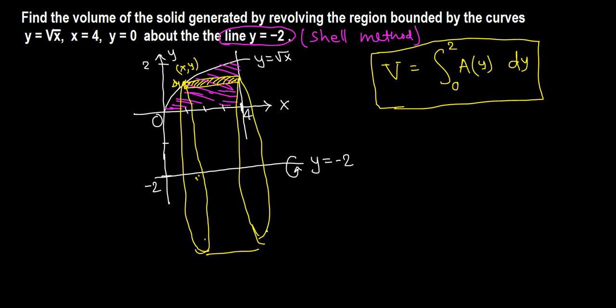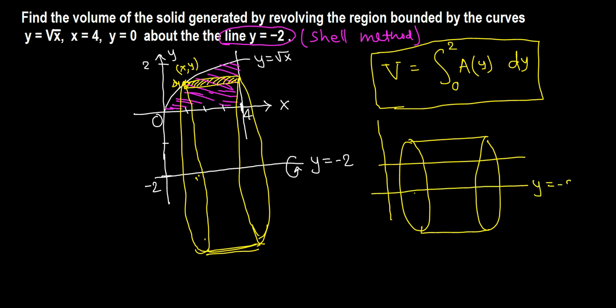So basically, let me draw over here a smaller version. So we have this. In fact, here is the y-axis and here is the x-axis, and we are revolving about here. This is y equals negative 2. The x-axis means y equals 0, and our generic point is here, that's x comma y.